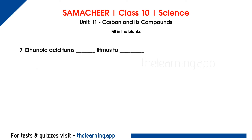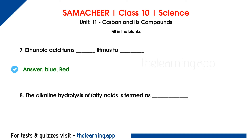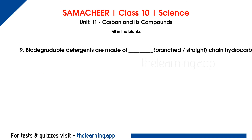Seventh question: ethanoic acid turns blue litmus to red. Eighth question: the alkaline hydrolysis of fatty acid is termed as dash — correct answer is saponification. Ninth question: biodegradable detergents are made up of dash chain hydrocarbons — correct answer is straight chain hydrocarbons. Biodegradable detergents have straight hydrocarbon chains, which can be easily degraded by bacteria. Non-biodegradable detergents have highly branched hydrocarbon chains and cannot be degraded by bacteria.